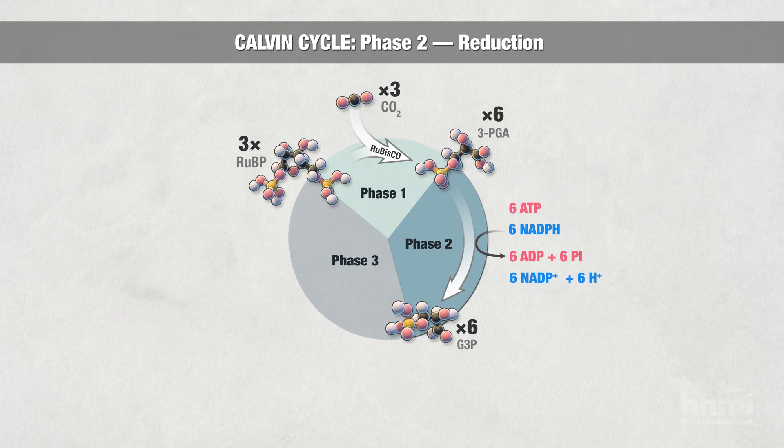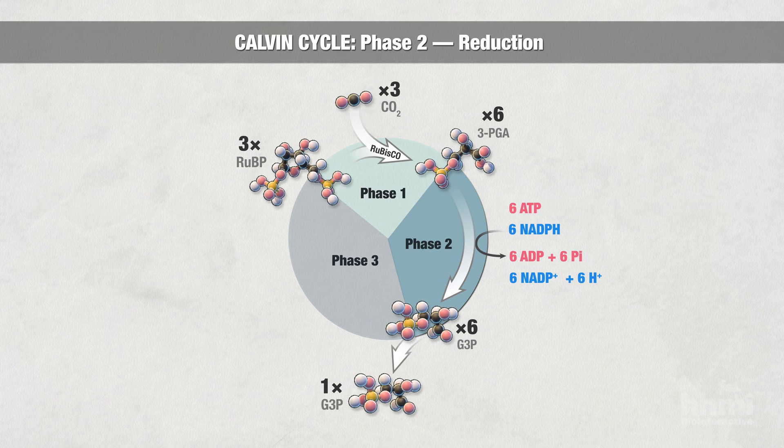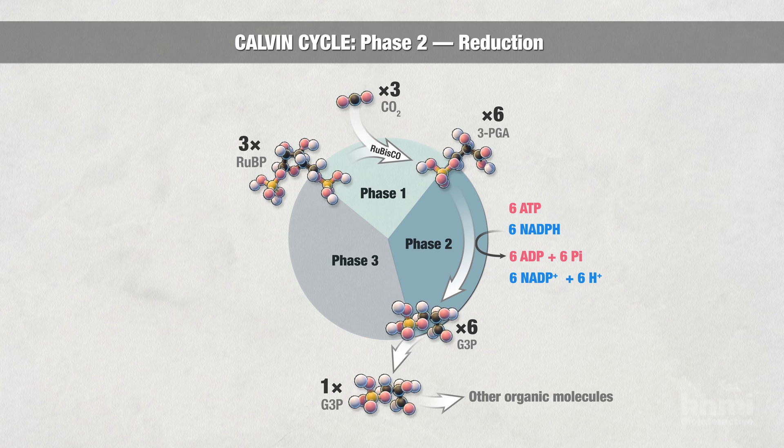The G3P molecules contain more electrons and are higher in potential energy than 3PGA. One molecule of G3P exits the cycle and can be used to make other organic molecules.